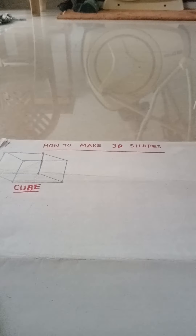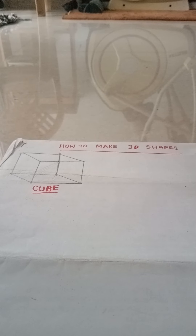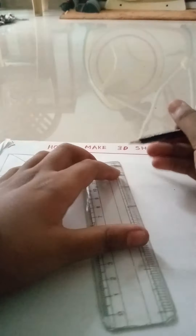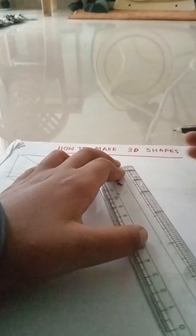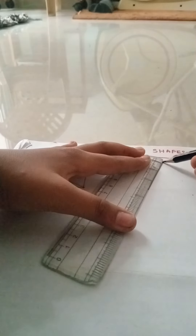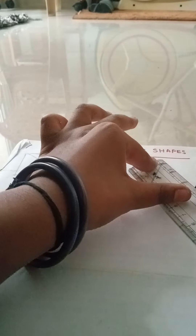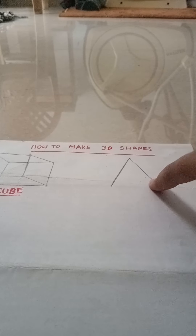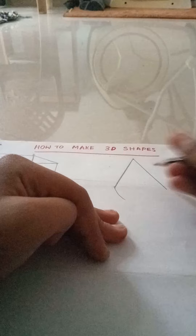Let us start making our second one. Our cube is ready. So here we will do our cone. First it is easy - all the shapes are easy. For cone, what we have to do is put a triangle like this. See here I am making the cone - it looks like an ice cream.